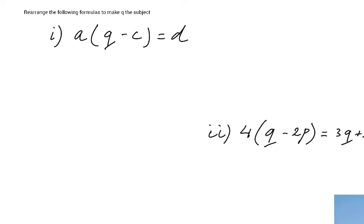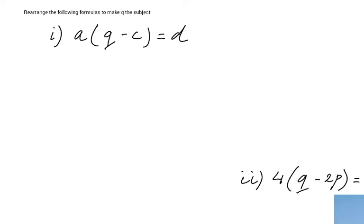Let's begin with the first one. Making q the subject means that I want it to say eventually, after all these steps, I want it to say q equals and then the rest of the formula. So what does one q equal to? That means that q is the subject that we have rearranged the formula.